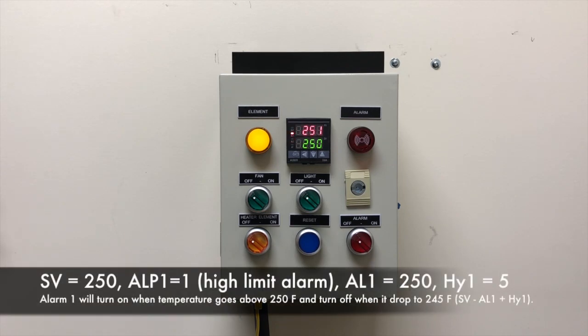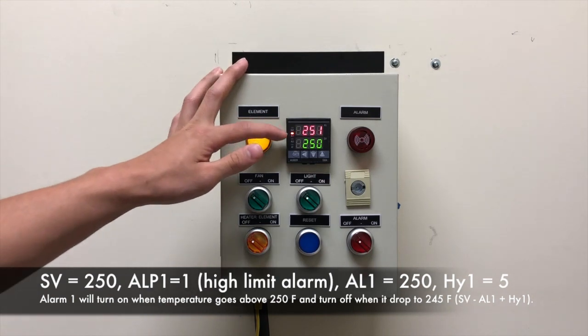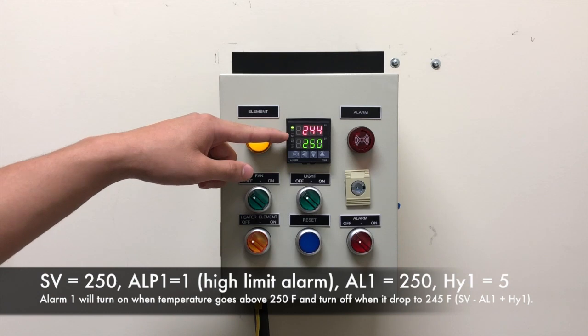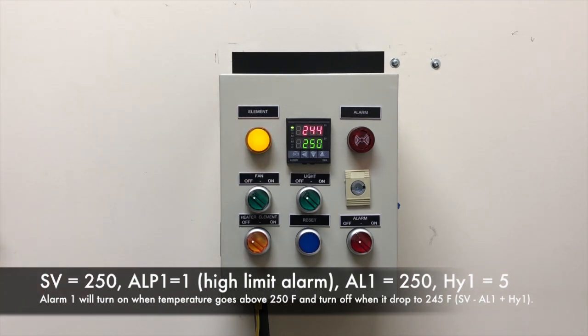And as you can see the AL1 indicator or the alarm 1 indicator will be lit when the temperature reaches above 250 degrees. The indicator is turned off when the temperature reaches below 245 degrees Fahrenheit.